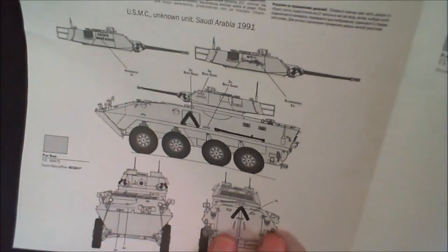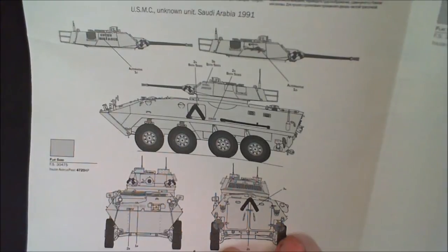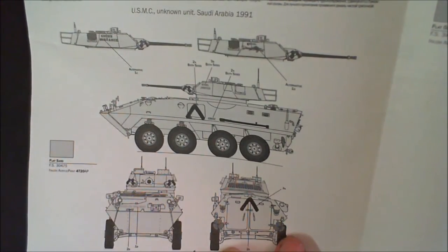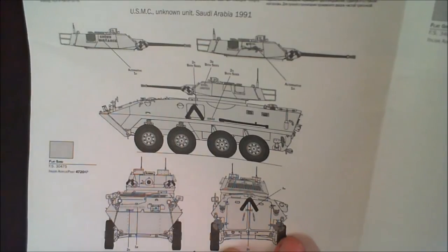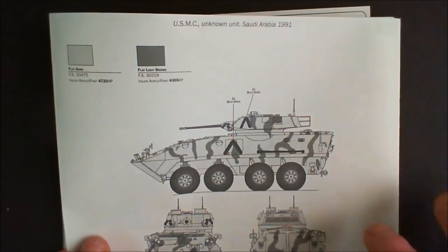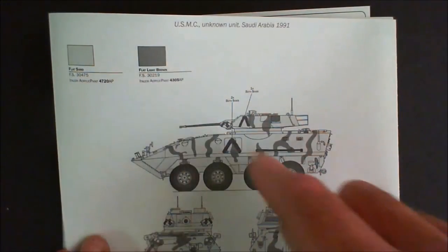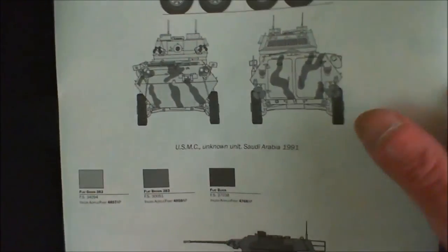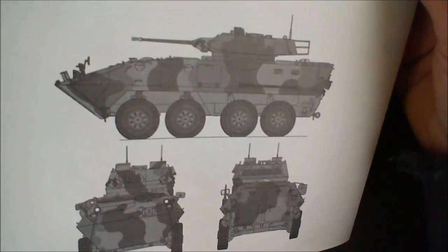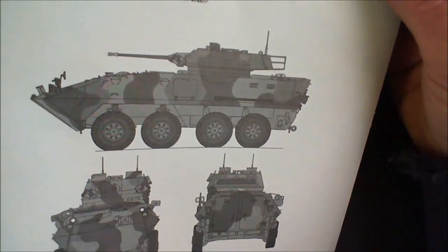We've got three color callouts. We've got one in just flat sand, US Marine Corps, unknown unit, Saudi Arabia, 1991. We've got a second one here which is sort of a CEBI camouflage I suppose you'd call it, but it's got the flat sand and the brown, duty marks on it. And we've got it in the NATO camouflage for US Marine Corps, again unknown unit, Saudi Arabia, 1991.